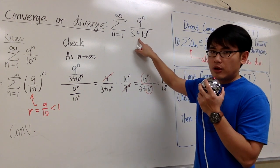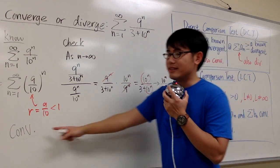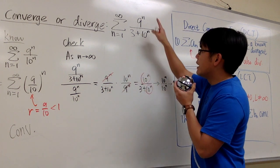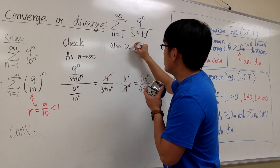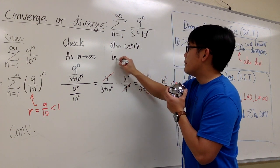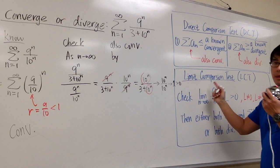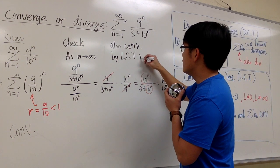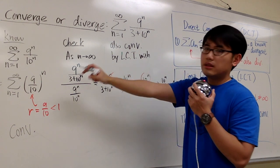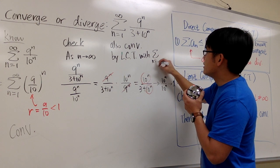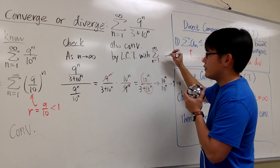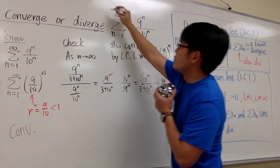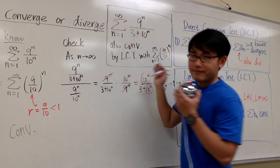The conclusion is, the original has the same conclusion as something that we know much better. Since this converges, we can also say that the original series also converges, and the reason is by the limit comparison test. Limit comparison test, with this series, summation when n goes from 1 to infinity, 9 over 10 to the nth power. And this is pretty much our conclusion. And that's it.